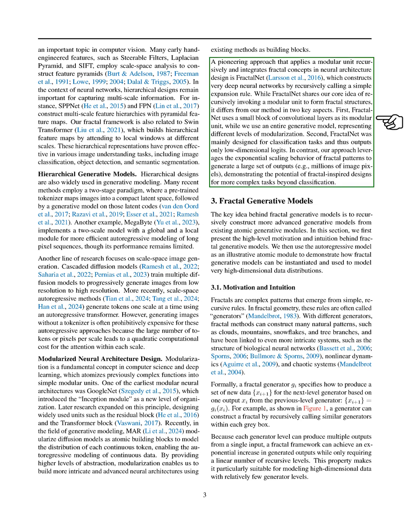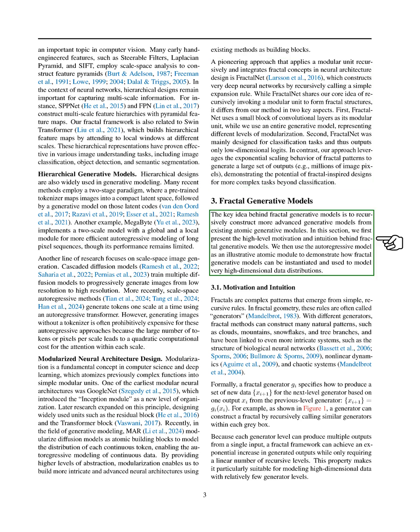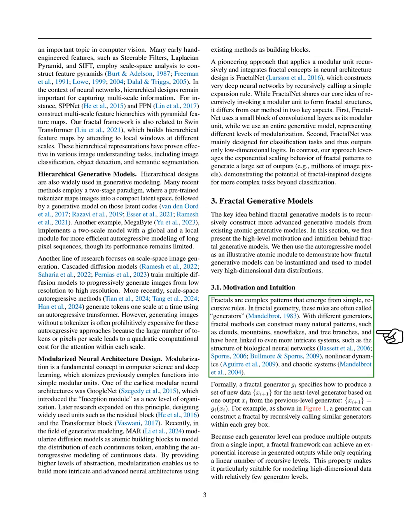In this section, we explore fractal generative models, which allow us to build more complex generative models from simpler, atomic modules through a recursive process. We begin by discussing the motivation and intuition behind these models. Fractals are intricate patterns created from simple, repeating rules known as generators. Different generators can create various natural patterns, like clouds and tree branches, and are connected to complex systems such as biological neural networks and chaotic dynamics.